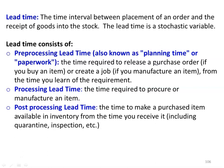Processing lead time is the time required to procure or manufacture an item — that is, after placing the order, you purchase the item. Then post-processing lead time is the time required to make the purchased item available in the inventory from the time you receive it, including quarantine time, inspection time, etc. So pre-processing lead time, processing lead time, and post-processing lead time are the three elements of lead time.